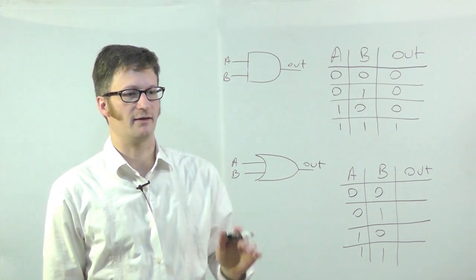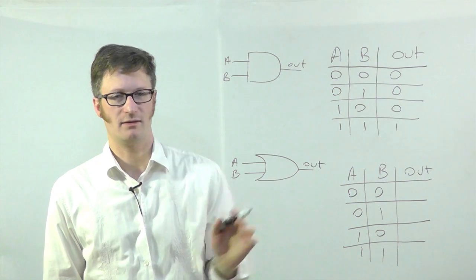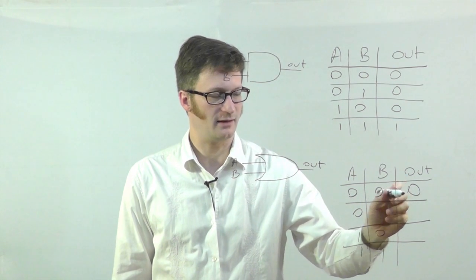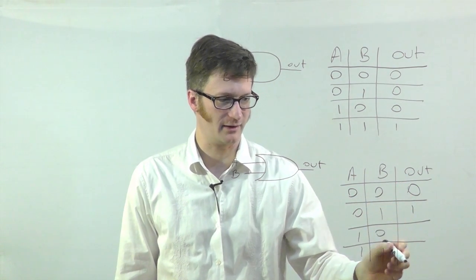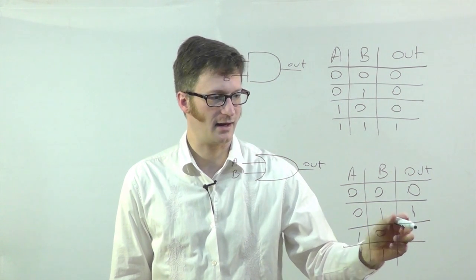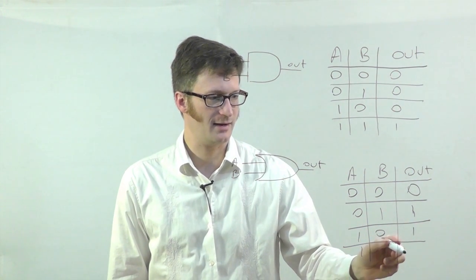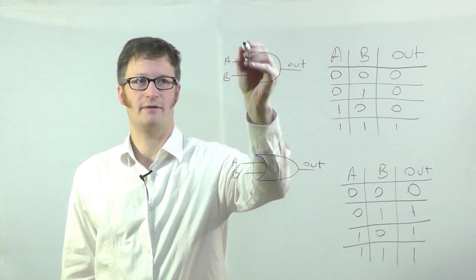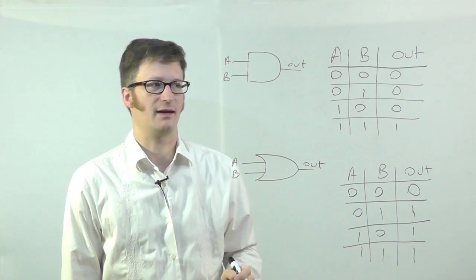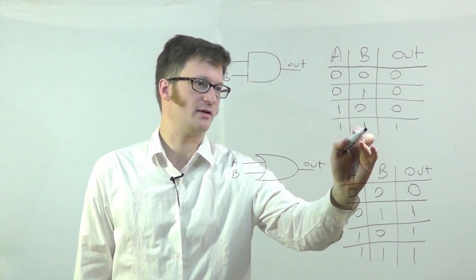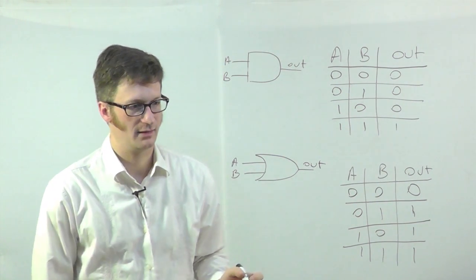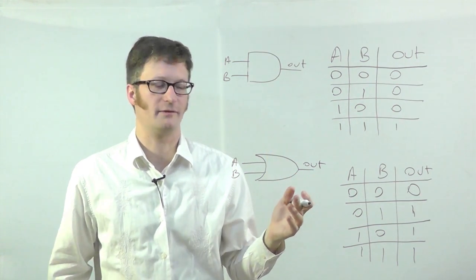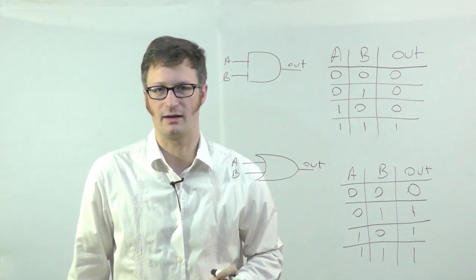The OR gate says: if A or B is high, then make the output high. So here, neither A nor B are high, so the output is low. B is high here, so we make the output high. A is high here, so we make the output high. And A and B are both high, so we make the output high. For a 5-input AND gate, all 5 inputs have to be 1 to get a 1 on the output. With a 5-input OR gate, all 5 would have to be low in order to get an output of low.